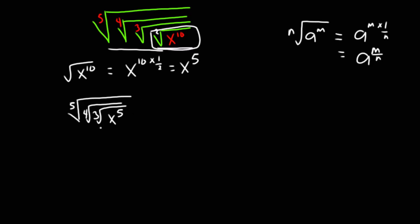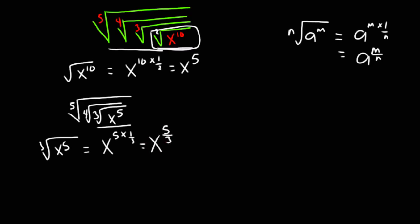To move further, I'm going to pick the cubic root and apply the property of indices. The cubic root of x exponent 5, according to the property, gives us x exponent 5 times 1 over 3, which is x exponent 5 over 3. So I'm going to reduce this whole thing because now I've resolved the cubic root.